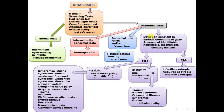If the abnormality shows a constant deviation in various directions of gaze with absence of identifiable neurological, mechanical, or sensory deficit, this may be infantile esotropia, acquired esotropia, or infantile exotropia. If not, consider whether there is a restriction due to mechanical forces — this may be trauma, Brown syndrome, or congenital fibrosis syndrome.